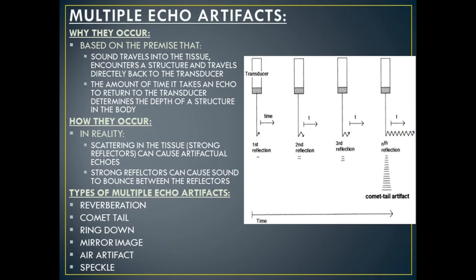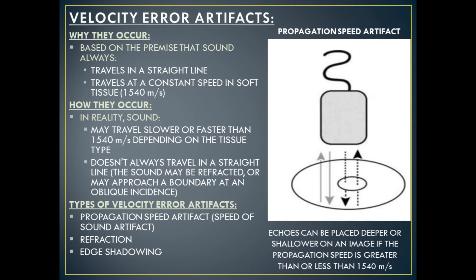Our next category of ultrasound artifacts are multiple echo artifacts. These occur because ultrasound is based on the premise that sound travels into the tissue, encounters a structure, and travels directly back to the transducer, and that the amount of time it takes an echo to return to the transducer determines the depth of a structure in the body. In reality, however, scattering in the tissue from strong reflectors can cause artifactual echoes, and strong reflectors can cause sound to bounce between them. Types of multiple echo artifacts include reverberation, comet tail, ring down, mirror image, air artifact, and speckle.